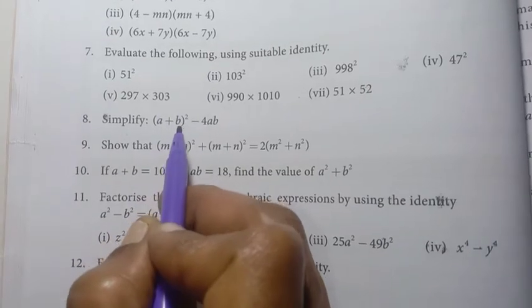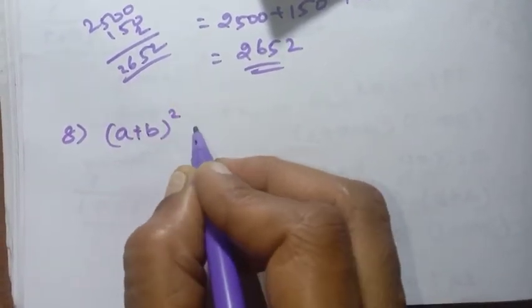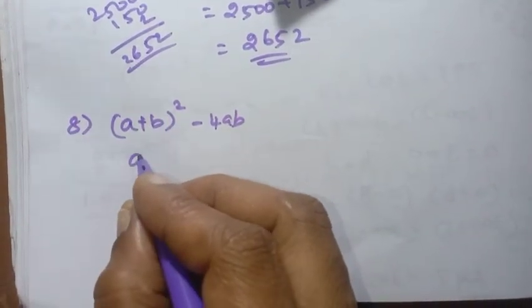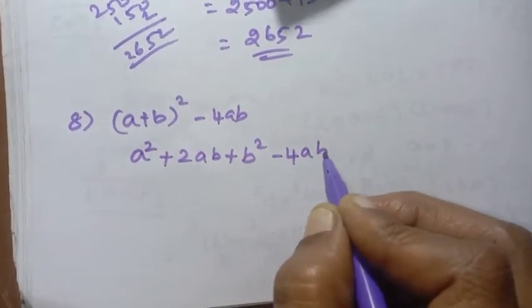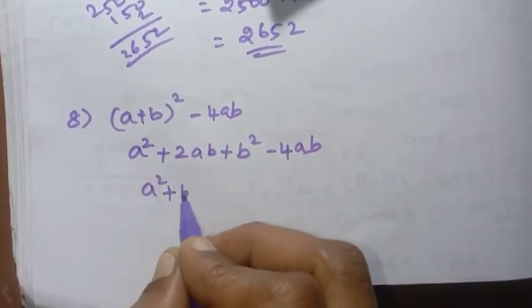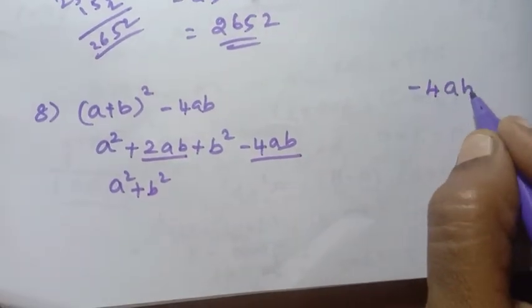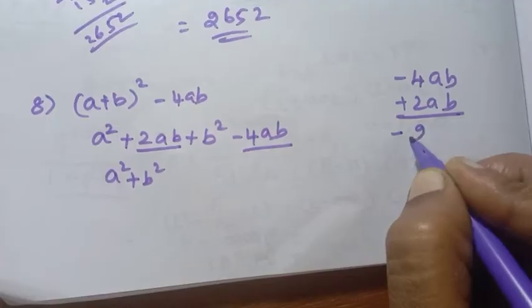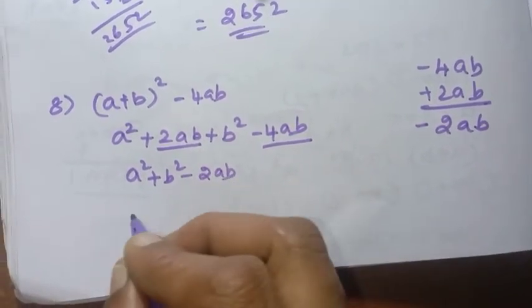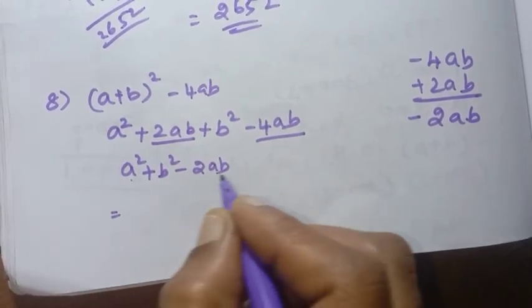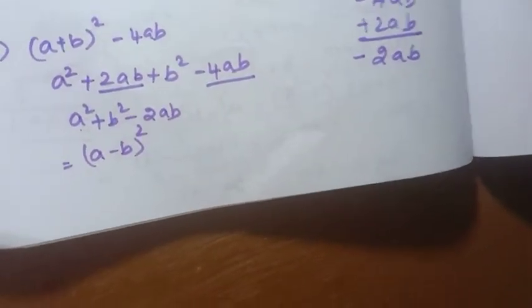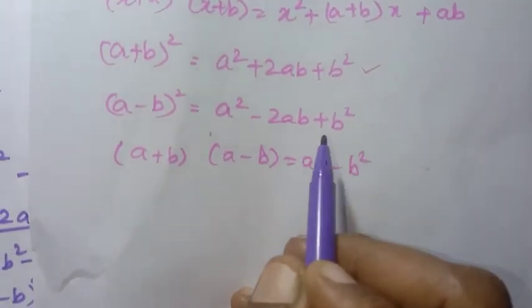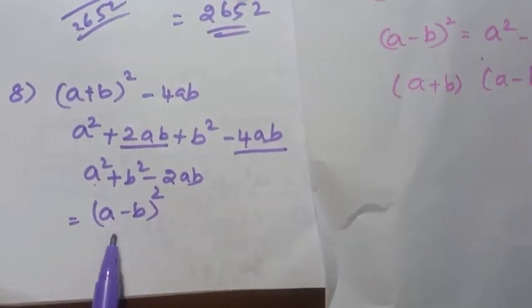Next, simplify A plus B whole square minus 4AB. Expanding: A square plus 2AB plus B square minus 4AB. Combining like terms: 2AB minus 4AB gives minus 2AB. So we get A square minus 2AB plus B square, which is equal to A minus B whole square. That is the simplified answer.